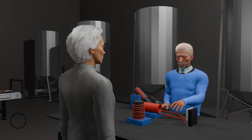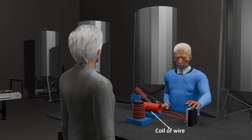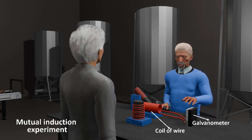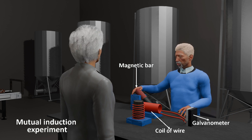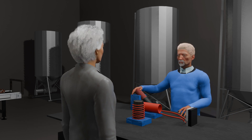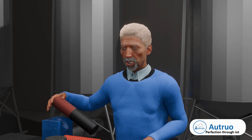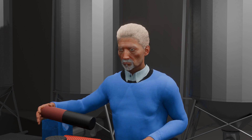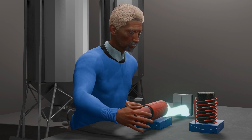This circuit consists of a coil of wire which is further connected to a galvanometer here. The magnetic bar that will be used for the experiments is held there. Now, if I should bring this magnetic bar and bring it inside this coil here.